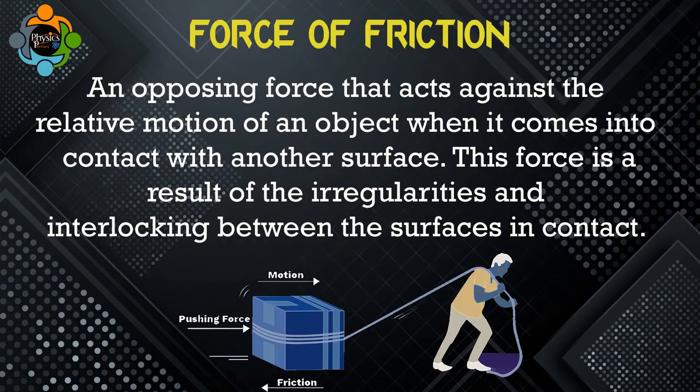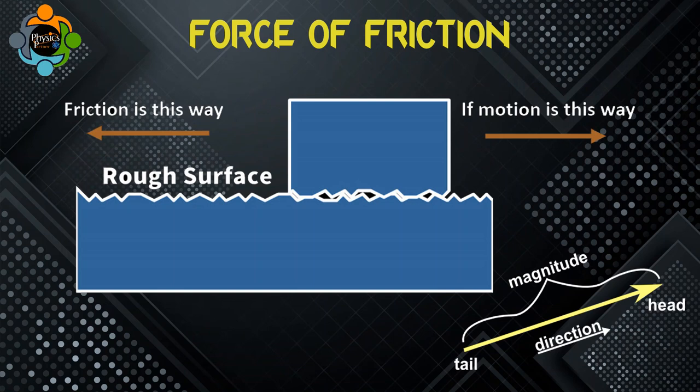The force of friction can be defined as an opposing force that acts against the relative motion of an object when it comes into contact with another surface. This force is a result of irregularities and interlocking between the surfaces in contact. The force of friction is a vector quantity as it contains both magnitude and direction.